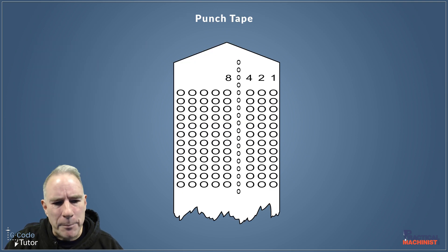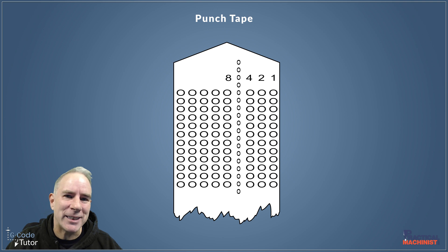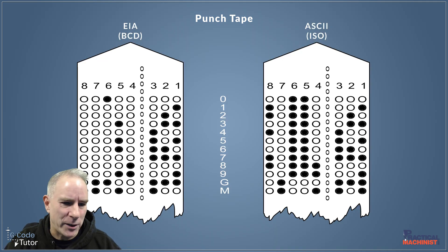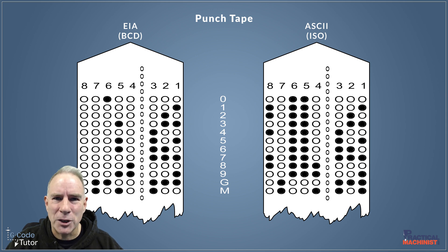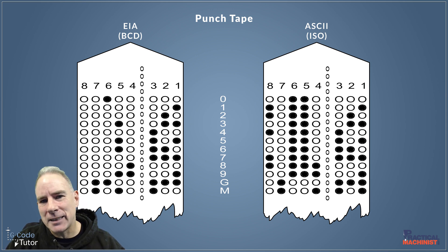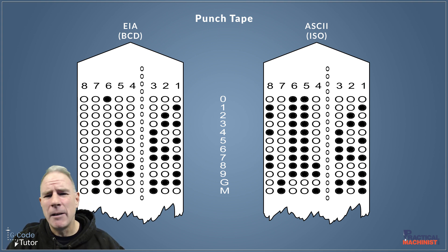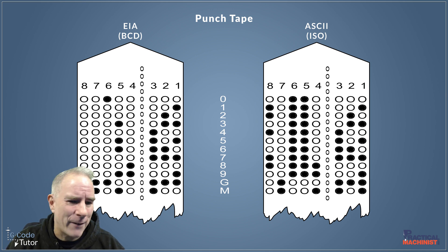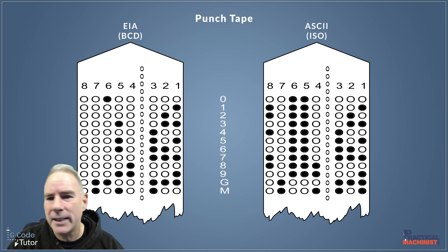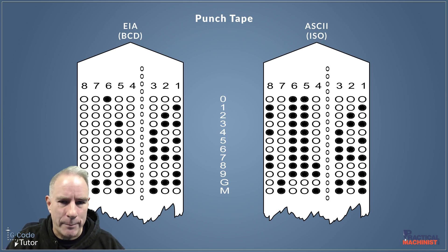Back when I first started machining we used to save our programs on punch tapes — they look a little bit like this. There are two different kinds of punch tapes. Back then, copying and pasting was a lot more complicated — we needed scissors and sellotape, but that's how we used to edit our programs. When I first came out of my apprenticeship I could actually read these, but I cannot now. I haven't used them in 30 years, but we learned how to read punch tapes.